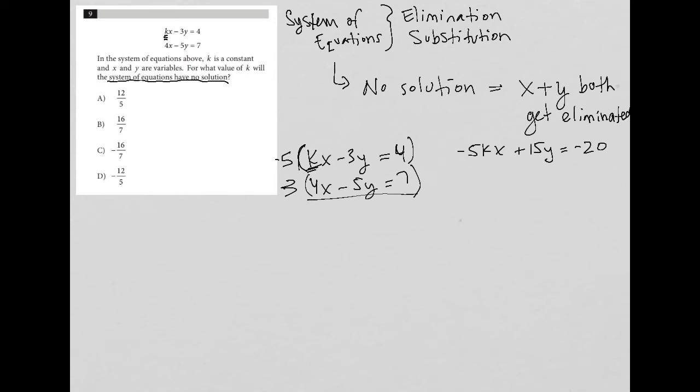And then on bottom, I'd have 12x minus 15y equals 21. Okay, so now I know for sure that my y's will cross out. But what about my x's? I want them to cross out as well.